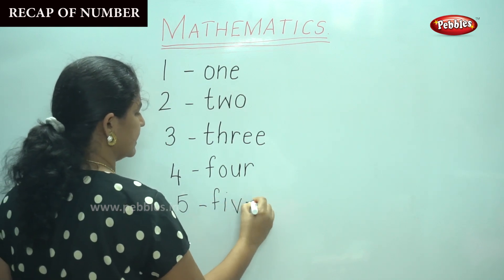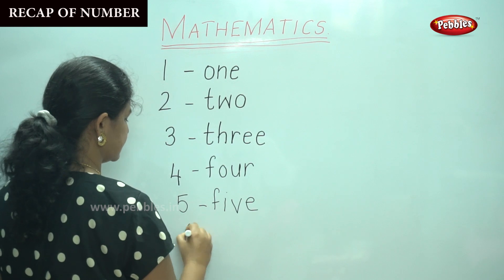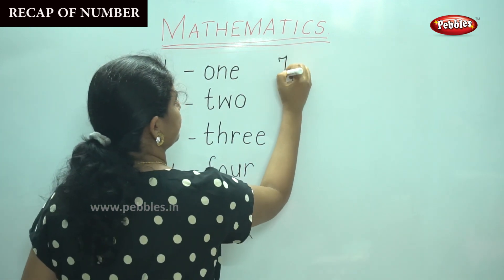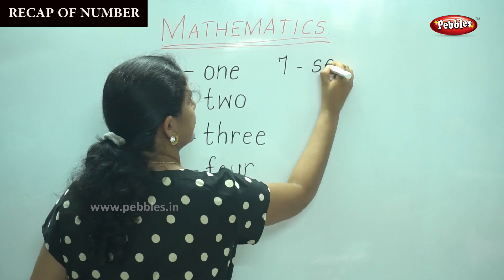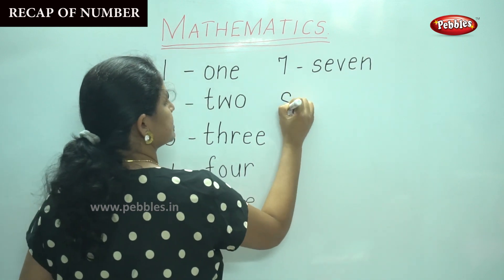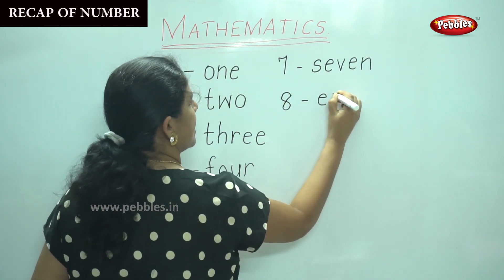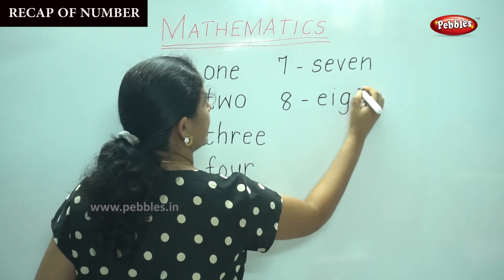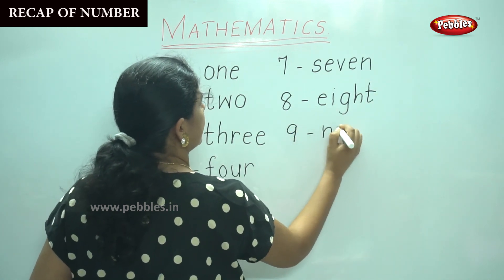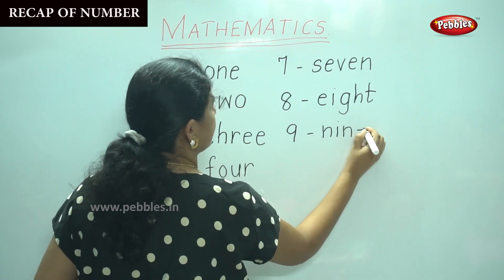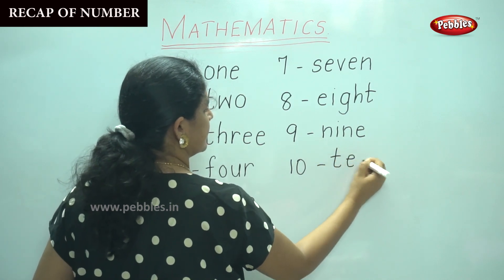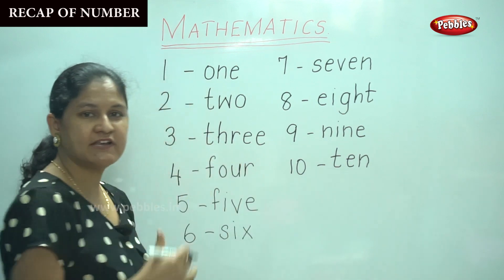5 F-I-V-E, 6 S-I-X, 7 S-E-V-E-N, 8 E-I-G-H-T, 9 N-I-N-E, 10 T-E-N. So are you ready to say it along with me, numbers 1 to 10?